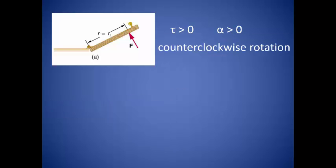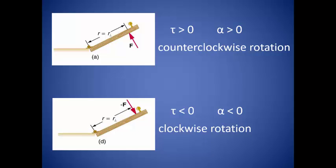So if we apply a positive force, then the torque is greater than zero. This means that the angular acceleration is greater than zero, and the direction of the rotation will be counterclockwise. If we apply a negative force, then the torque is less than zero. This means that the angular acceleration is less than zero, and the direction of the rotation will be clockwise.